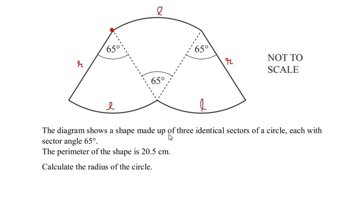So the perimeter is made up of two radii and three arc lengths. Let me write it here. Perimeter is equal to two times radius plus three times the arc lengths. Now perimeter is given as 20.5, so let us write 20.5 equals two times radius, plus three times